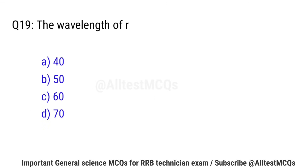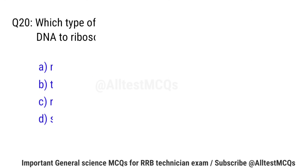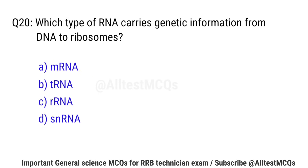Question No. 19: The wavelength of red light is approximately? Right option is D: 700 nanometers.